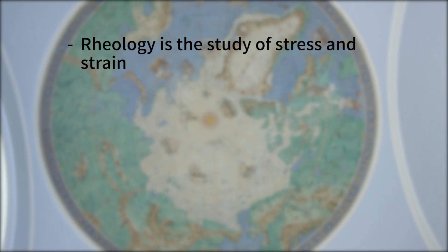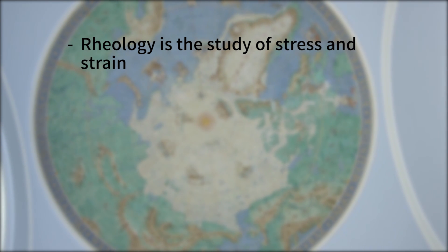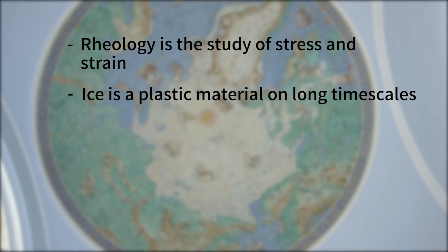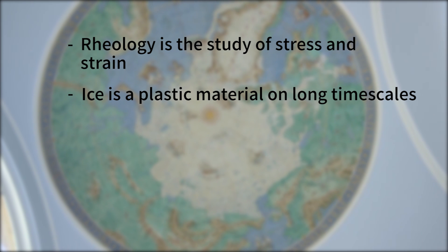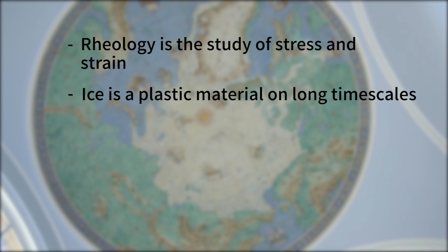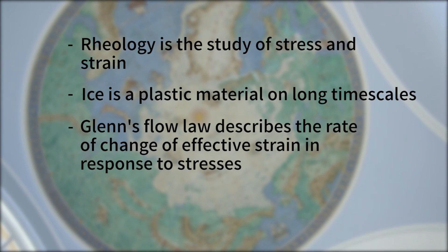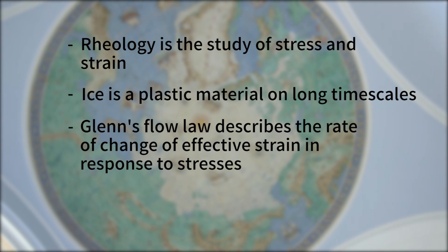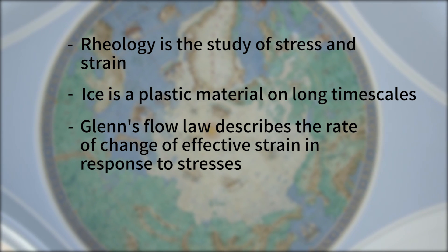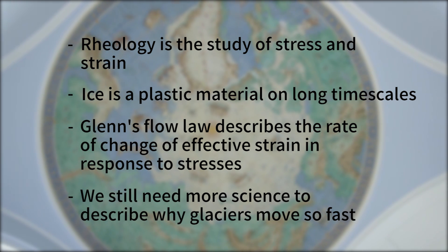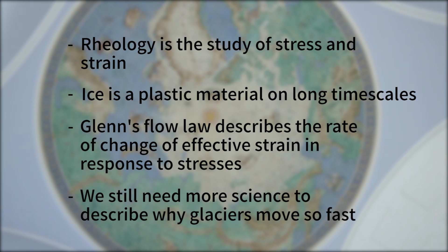This week, we covered that rheology is the science of stress and strain, and that stress and strain are how we think about a material's behavior as it responds to pressure. That ice is a plastic material on long timescales. It retains brittle behavior, but ultimately behaves as a very, very viscous plastic solid, like a half-melted chocolate bar. That Glenn's flow law describes how the rate of change of the effective strain experienced by ice depends on the temperature of the ice and the stress that it's experiencing. But, as Tom said in his cliffhanger ending, glaciers move faster than the equations and processes that we've discussed this week can account for. Why? You have to tune in next time to find out.